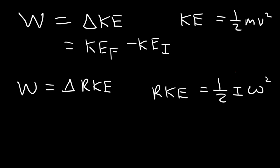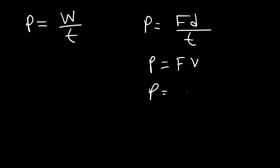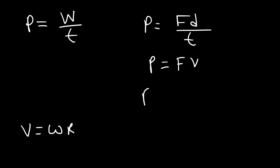Notice the similarities between these two equations. The next thing we need to calculate is power. Power is work divided by time. We know work is force times displacement, and displacement divided by time is velocity. So power is force times velocity. The rotational equivalent is: power is torque times angular velocity. To derive it, you need to realize that V is equal to omega times R. Replacing V with omega times R, and since F times R is the torque, we get: power is torque times angular velocity.